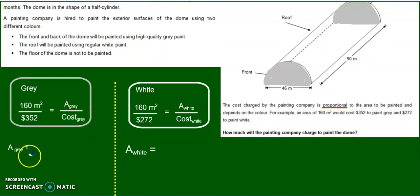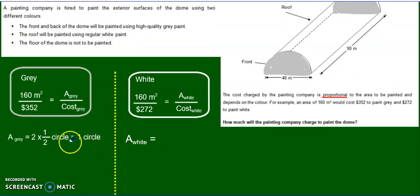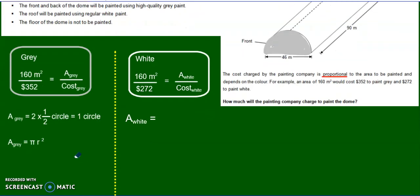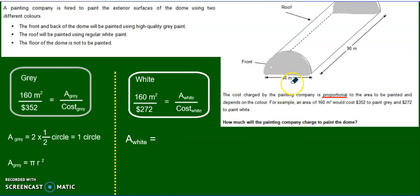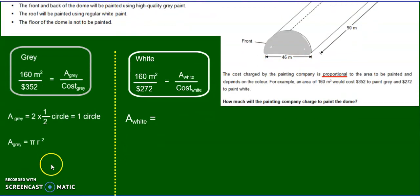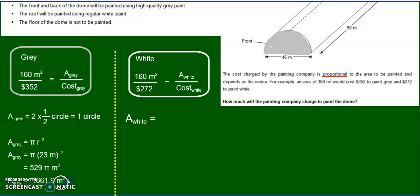So let's start with the grey. The grey is two half circles, which makes one circle. The area of one circle is π r². We know the diameter is 46, so the radius is half of that — the radius is 23. So π times 23 squared gives you 1,661.9 meters squared. That is the area of the grey part.